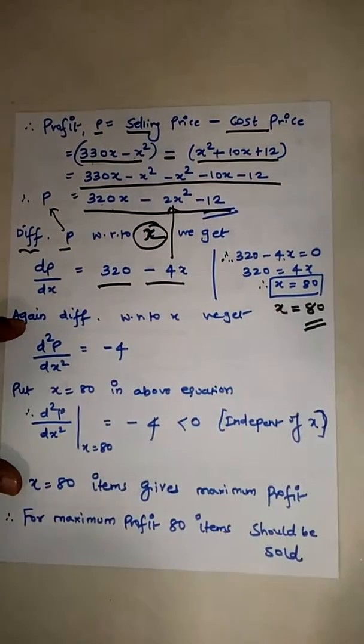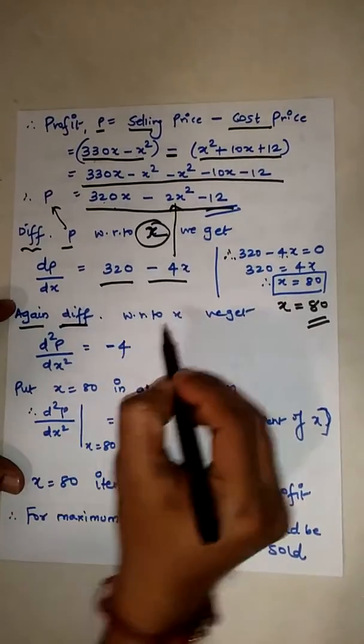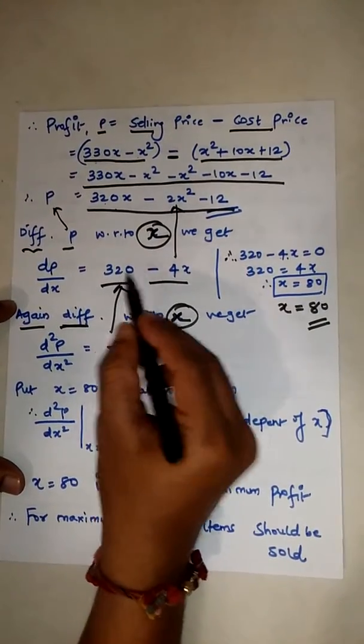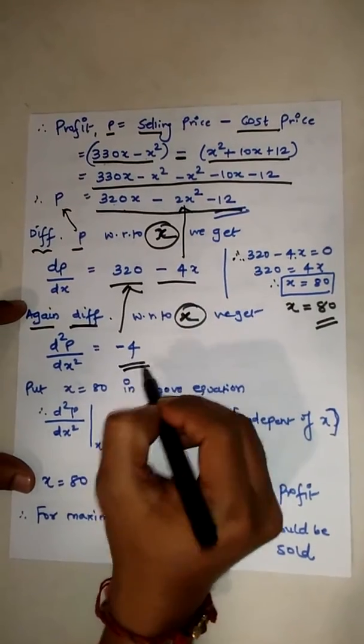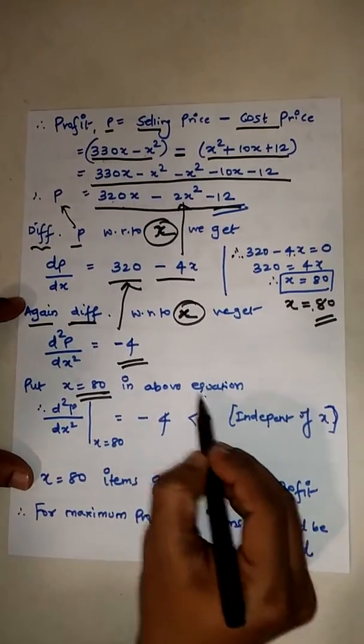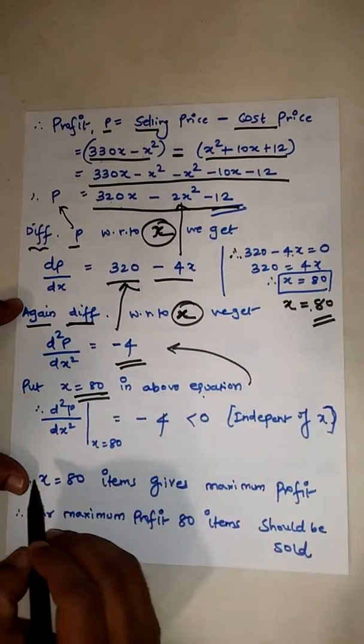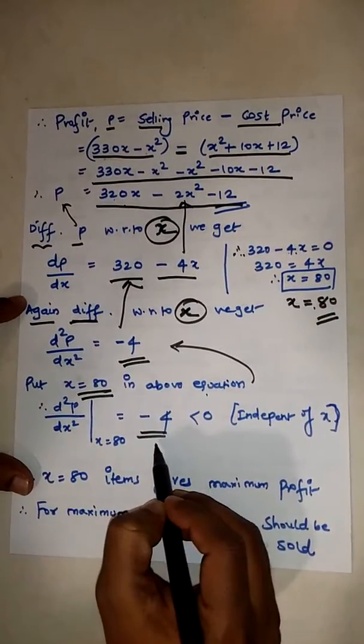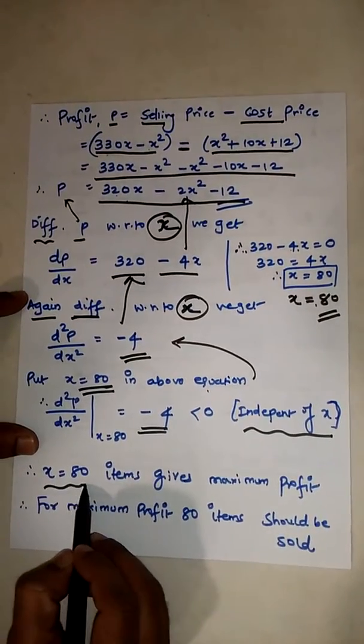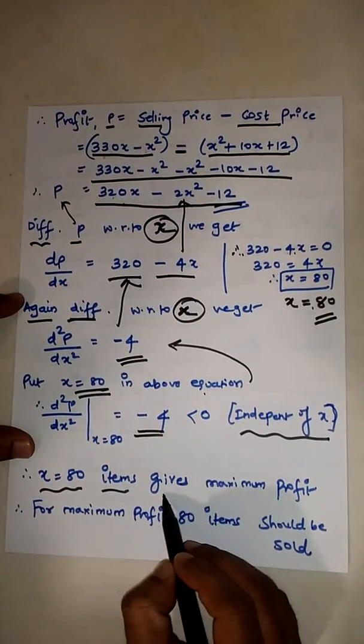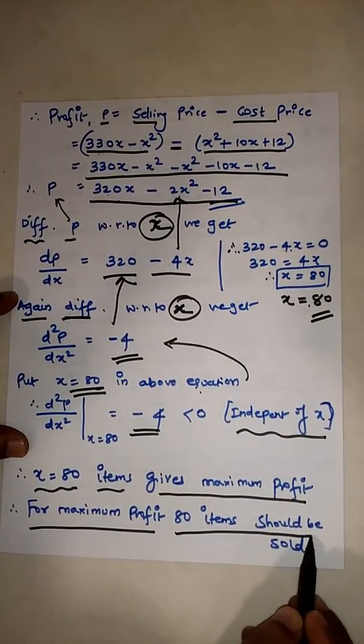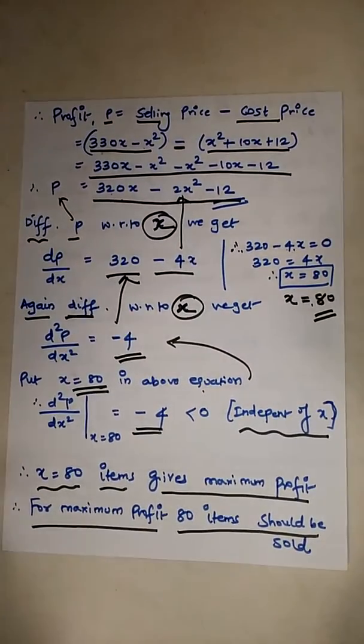Again differentiate with respect to x. For the second derivative, we get d²P/dx² equals minus 4. Now put x equals 80 in the above equation. As it is a number independent of x, this means x equals 80 items gives the maximum profit. For maximum profit, 80 items should be sold.